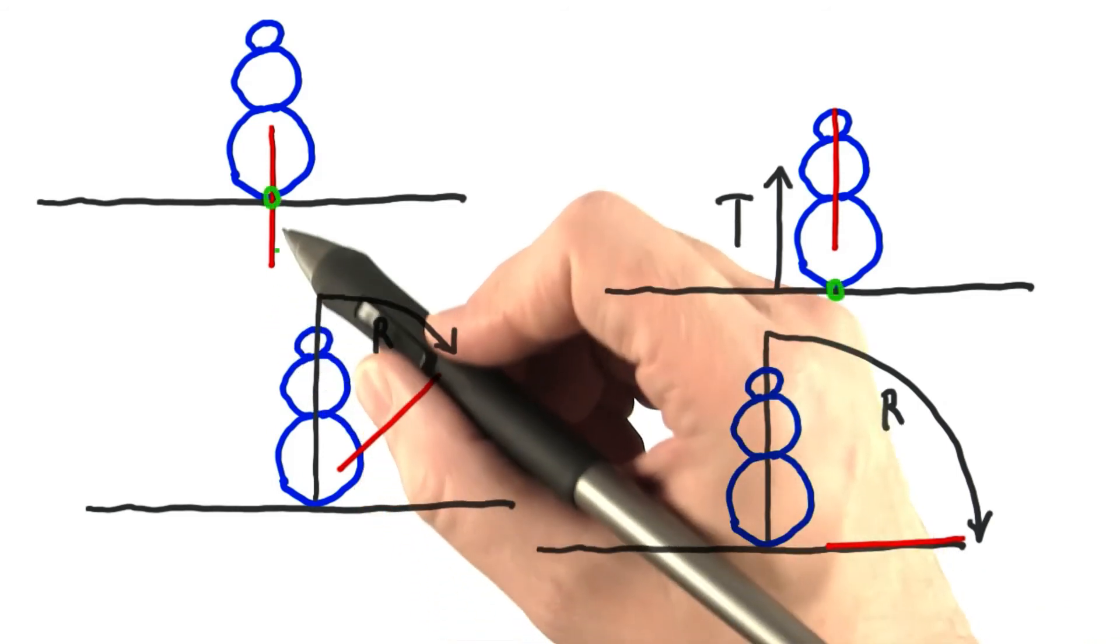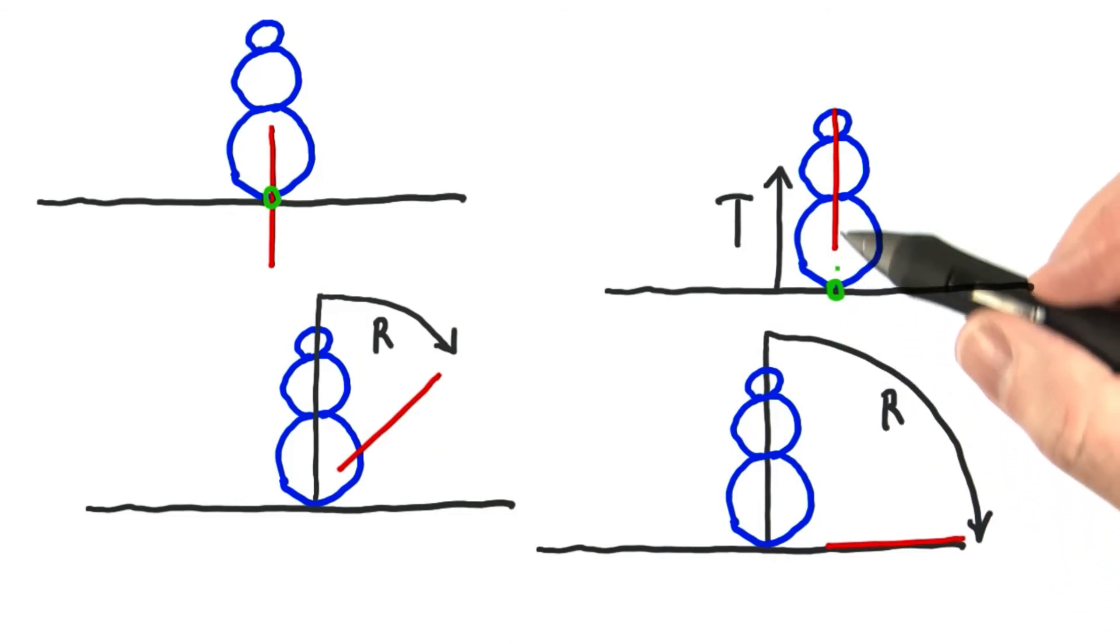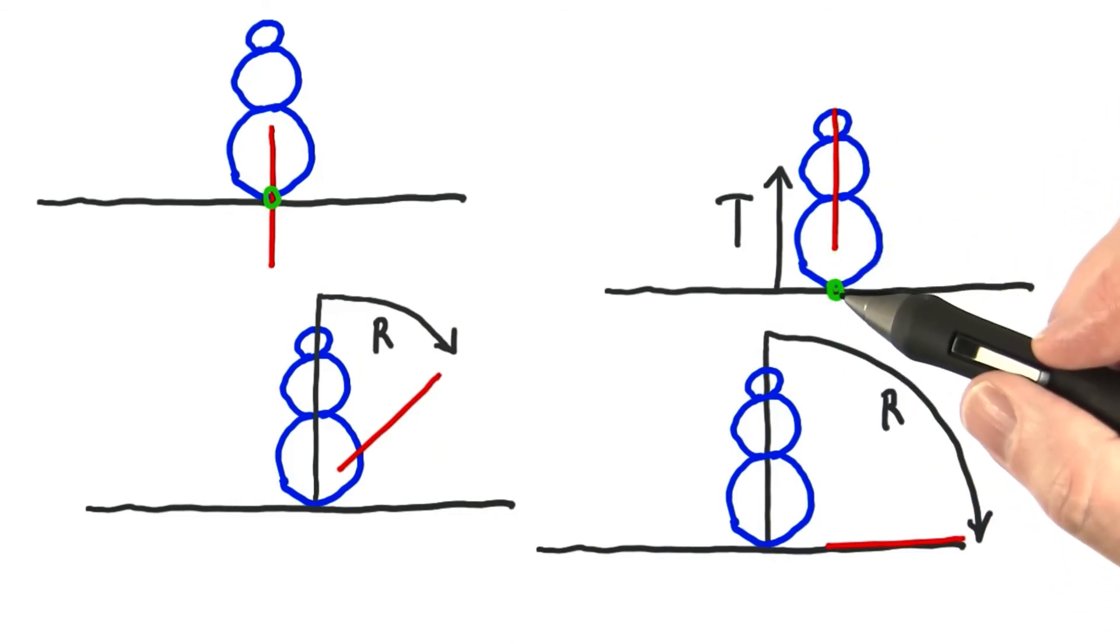Another way to think about it is that translating an object moves its center. You're moving the object up. Relative to the stick, you're moving the point it will rotate around down.